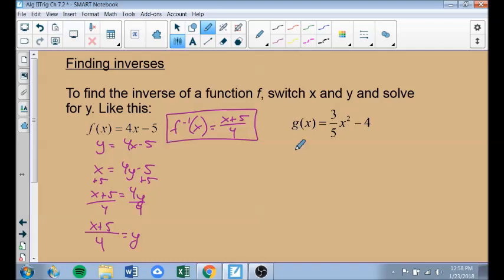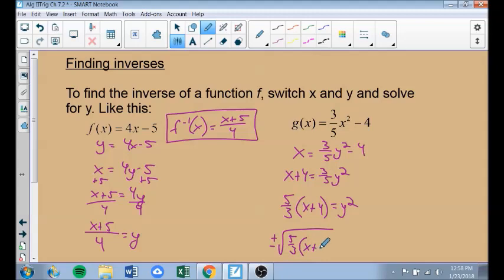Do it again over here. This is going to be X equals 3 fifths Y squared minus 4. To find the inverse of this, I first add 4 to both sides. Then I multiply both sides by the reciprocal of 3 fifths, which is 5 thirds. And then I square root both sides. The square rooting of both sides actually gives me a plus or minus, which causes a bit of a problem. It's like we had to make two functions out of this. Our G inverse has two pieces to it, a positive and a negative root 5 thirds X plus 4.